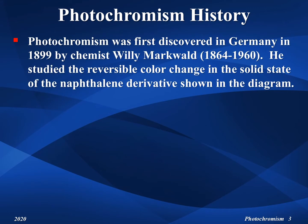Photochromism was first discovered in Germany in 1899 by chemist Willy Markwald. He studied the reversible color change in the solid state of a naphthalene derivative with the structure shown in the diagram.